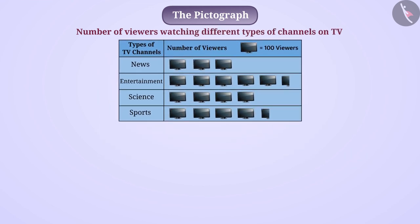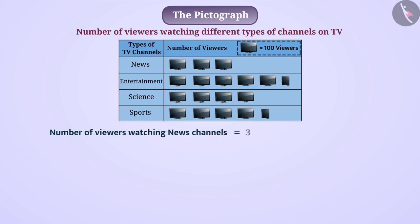Here, the number of viewers of the news channel is represented by three pictures. Since the value of one picture is 100 viewers, we can say that the number of people watching the news channel in the village is 3 multiplied by 100 viewers, which equals 300 viewers.